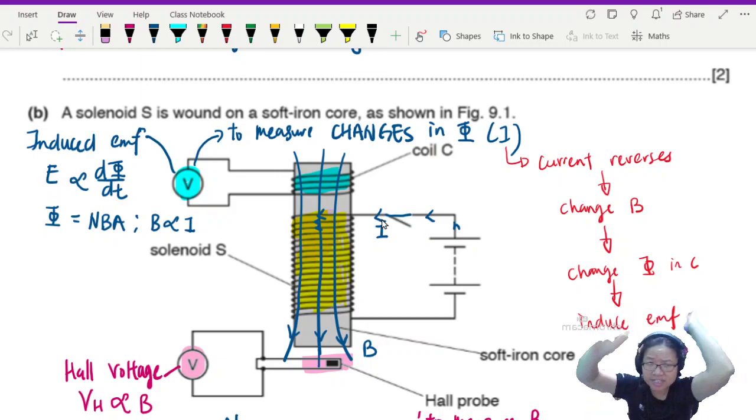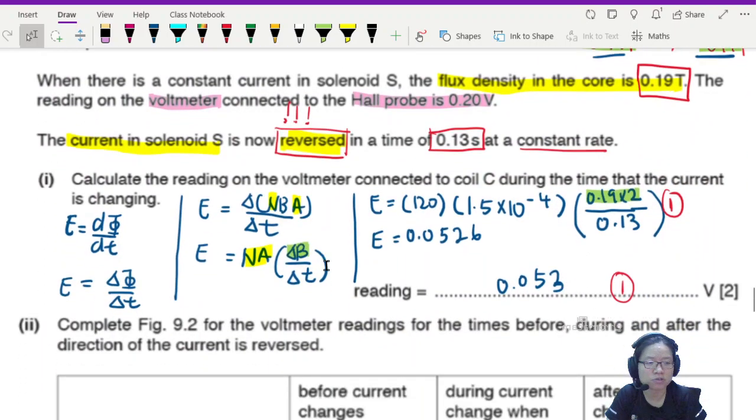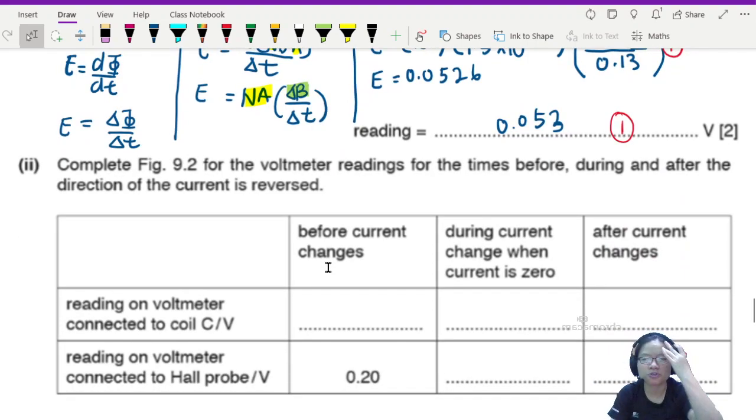So hence our initial guess is correct. Current reverses will change the magnetic flux density, which will change the magnetic flux linkage in C, which will induce EMF according to our good friend Faraday. So all these things here, you got to know, right? It's like a Russian doll. You reverse the current, you change the magnetic flux density, you change the magnetic flux from Faraday, we will induce an EMF. Pretty cool. So we now have the voltmeter reading, 0.053 or 0.0526.